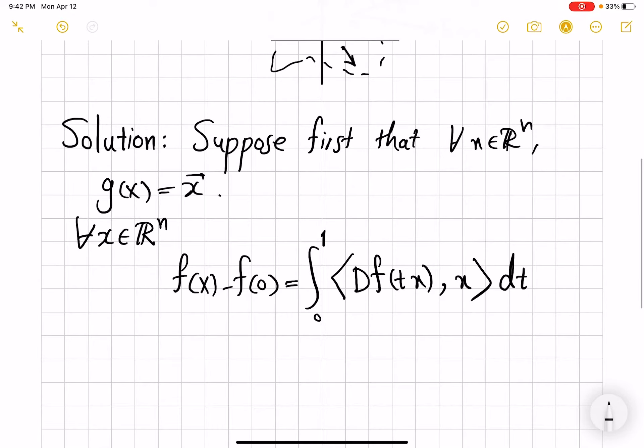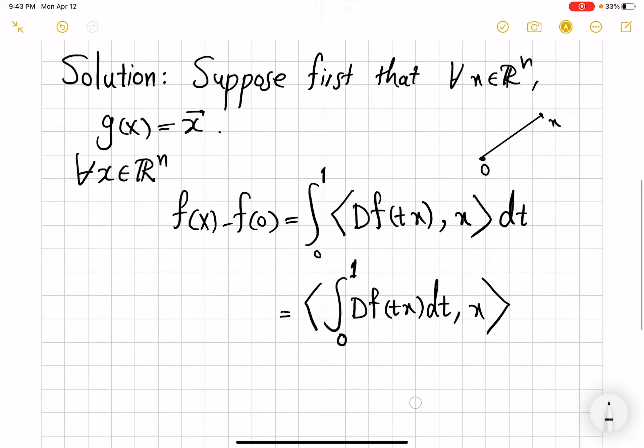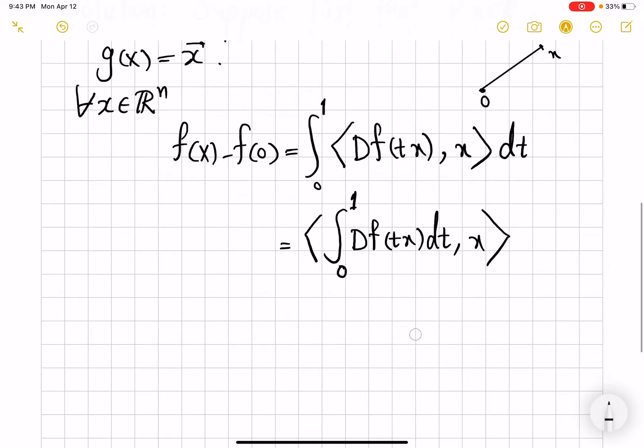So geometrically, all you do is just integrate along this line, which connects 0 to x. Then it's easy to see that you could first integrate this vector function dt component-wise, and only then dot product it with x. Notice how x does not depend on t at all.